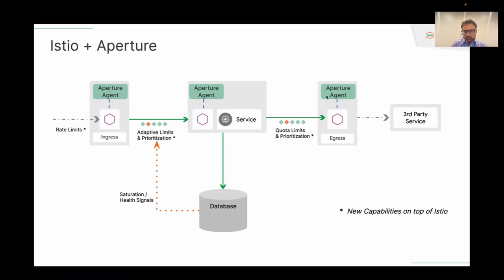Another use case of Aperture in an Istio service mesh is on the egress — calls going outside your cluster to a third party like OpenAI. You want to work backwards from that limit, modeling it internally using token buckets, staying within limits, and prioritizing traffic so that high-priority requests get to use that OpenAI quota first.